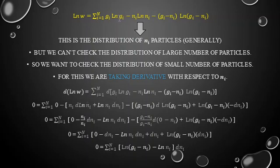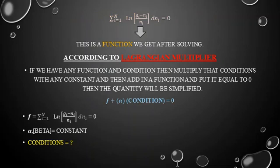For the term nᵢ·ln(nᵢ), we apply the product rule (u·v formula) since both nᵢ and ln(nᵢ) depend on nᵢ. After applying the derivatives of all three terms and simplifying using basic calculus, we obtain: Σ ln[(gᵢ - nᵢ)/nᵢ] dnᵢ = 0.